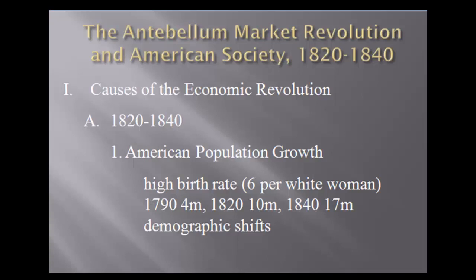One of the things we look at here in trying to account for it is simply the growth of the American population — we have lots of consumers and lots of producers. Our population rate in that 50-year period goes from 4 million to 17 million. That's dramatic growth for America. We have a very high birth rate. We don't have good statistical information on populations other than white women, but we see that's a very high rate — to have six children.